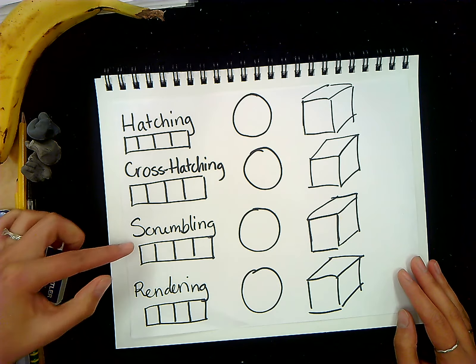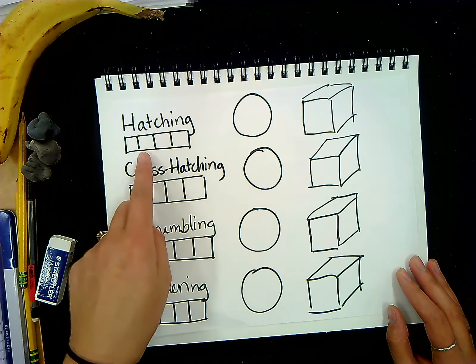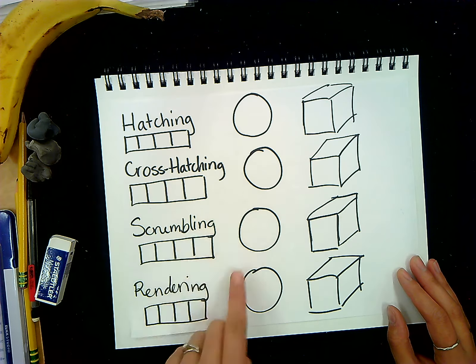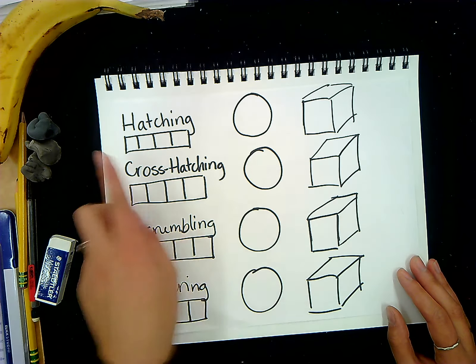You are going to write the words hatching, cross-hatching, scumbling, and rendering. Underneath those words, you are going to make a rectangle and section it off into four parts. You are then going to draw a circle and a cube to the best of your ability beside each one.